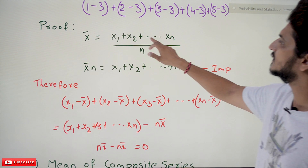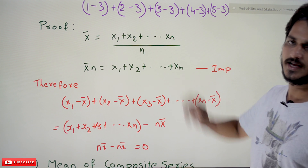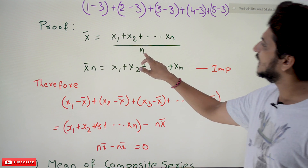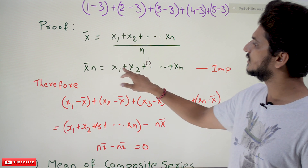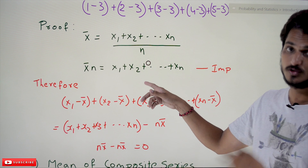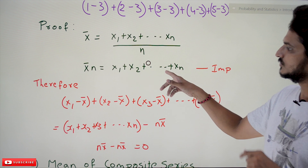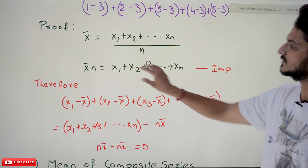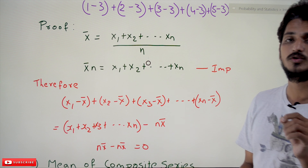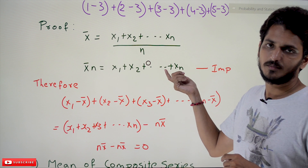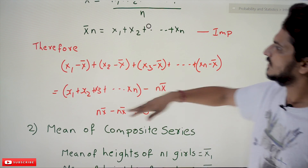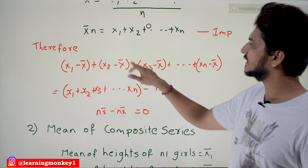x̄ = (x1 + x2 + ... + xn) / n — this is how we calculate the arithmetic mean for n data points. If you take n to the right-hand side: n·x̄ = x1 + x2 + ... + xn. This is an important point — we will use this most of the time in our examples. The sum of all data points equals n·x̄.